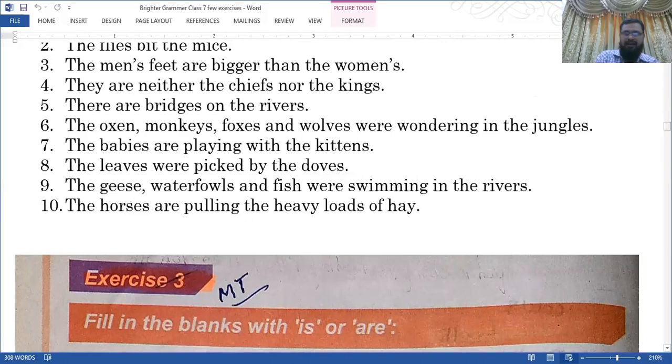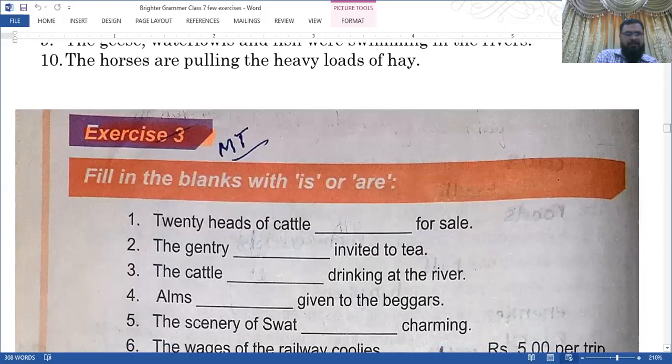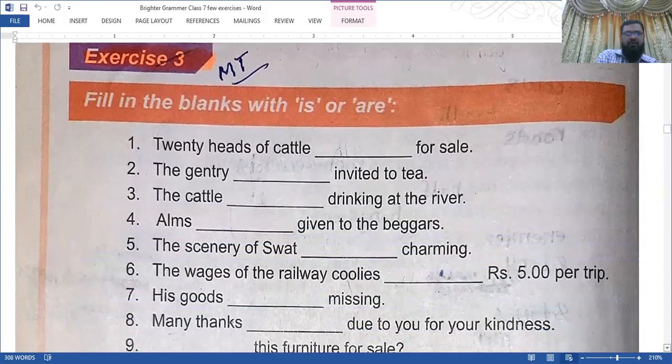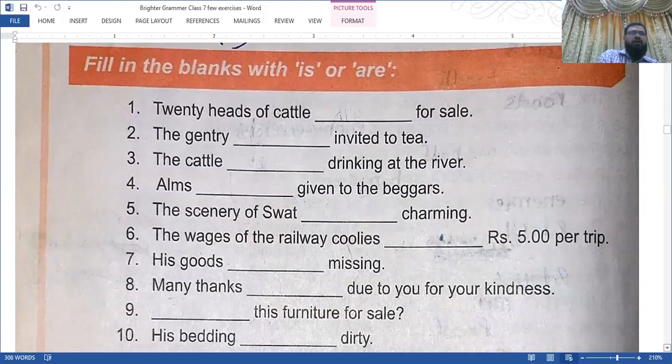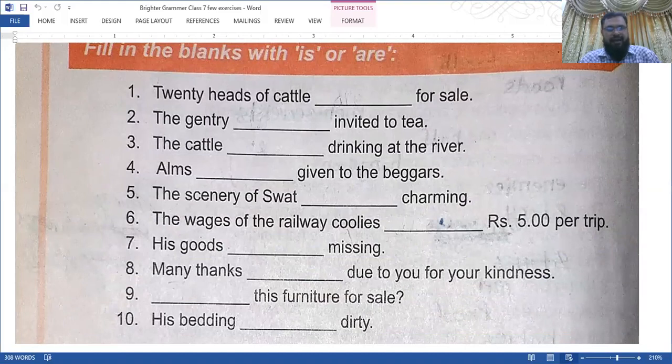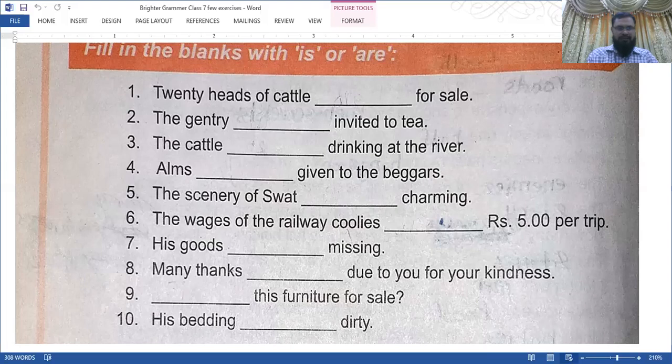Exercise three: Fill in the blanks with the correct singular or plural form. Number one: Twenty head of cattle were for sale. The gentry were invited. The cattle are drinking at the river. Alms were given to the beggar. The scenery of Switzerland is charming. The wages of a riksha puller is five rupees per trip. Every country has its own currency and abbreviation. His goods are missing. Many thanks are due to you for your kindness. This furniture is for sale. His bedding is dirty.